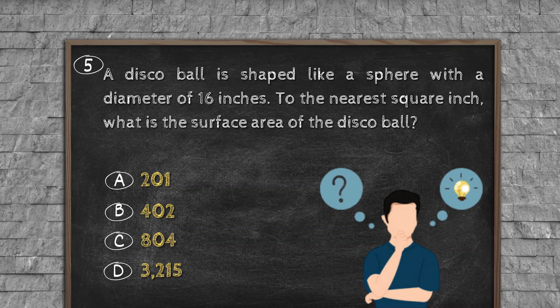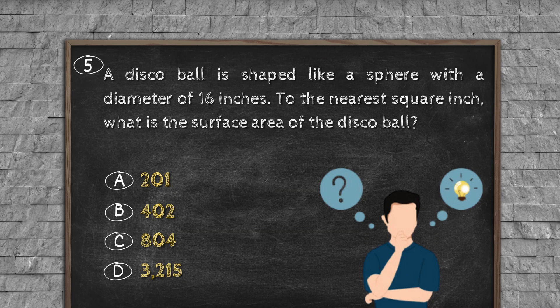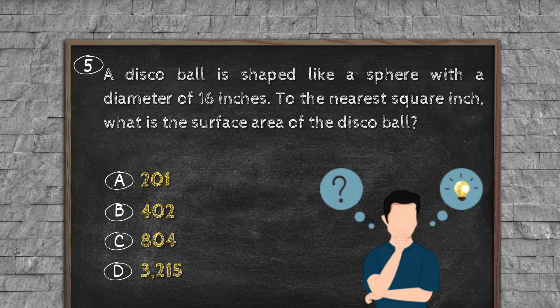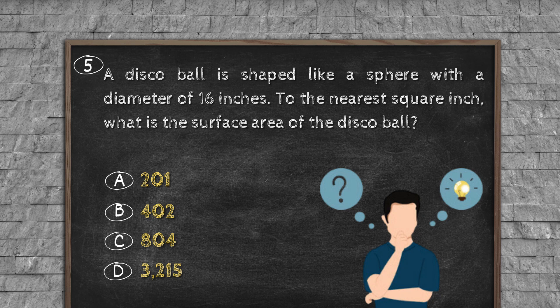Question number five: A disco ball is shaped like a sphere with a diameter of 16 inches. To the nearest square inch, what is the surface area of the disco ball? Option A: 201. Option B: 402. Option C: 804. Option D: 3250.